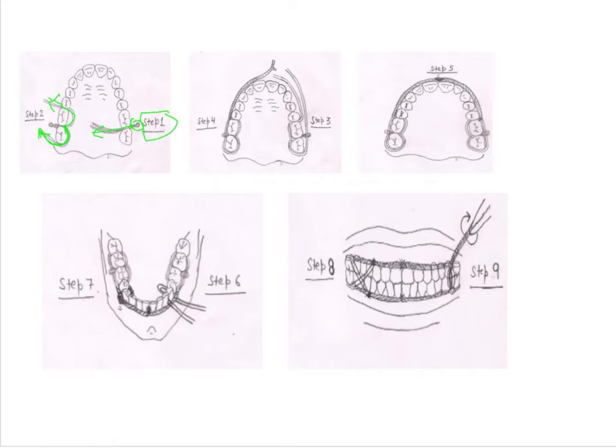After that, these two, this particular distal one will be threaded into the eyelet. So, in the step three, you'll be threading the distal wire through the eyelet and the another wire will be passed through the interdental area and it will be brought on the buccal aspect itself and these two are wound. Again, we'll be doing the winding of these two wires.